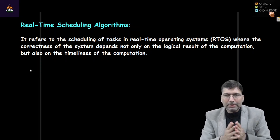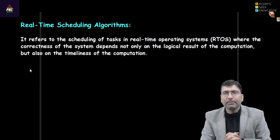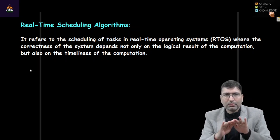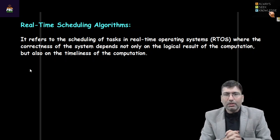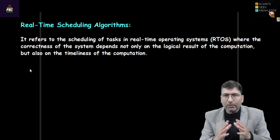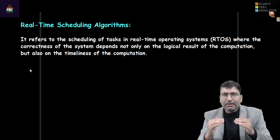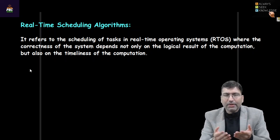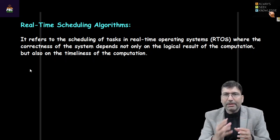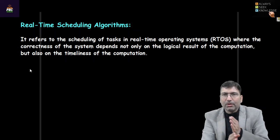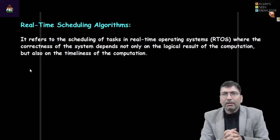In this lecture we are going to discuss different categories of scheduling algorithms which we consider real-time scheduling algorithms. In real-time operating systems, every task has an associated deadline. If we are executing a program, generally we consider getting the correct output as success, but in a real-time scenario, although a program generates a correct output, if it is not able to meet the deadline, we consider that a failure.